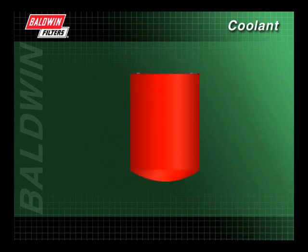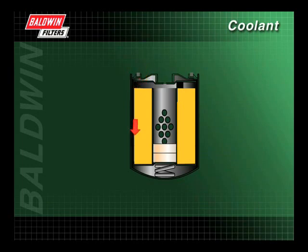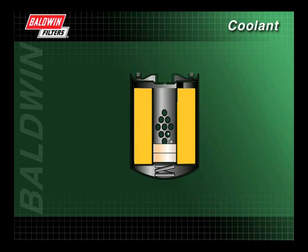When using a standard service spin-on coolant filter with chemicals, coolant enters here, is filtered through the media, then passes through the center tube. SCA pellets, located inside the center tube, dissolve as coolant passes through. The coolant then continues on into the engine cooling system.